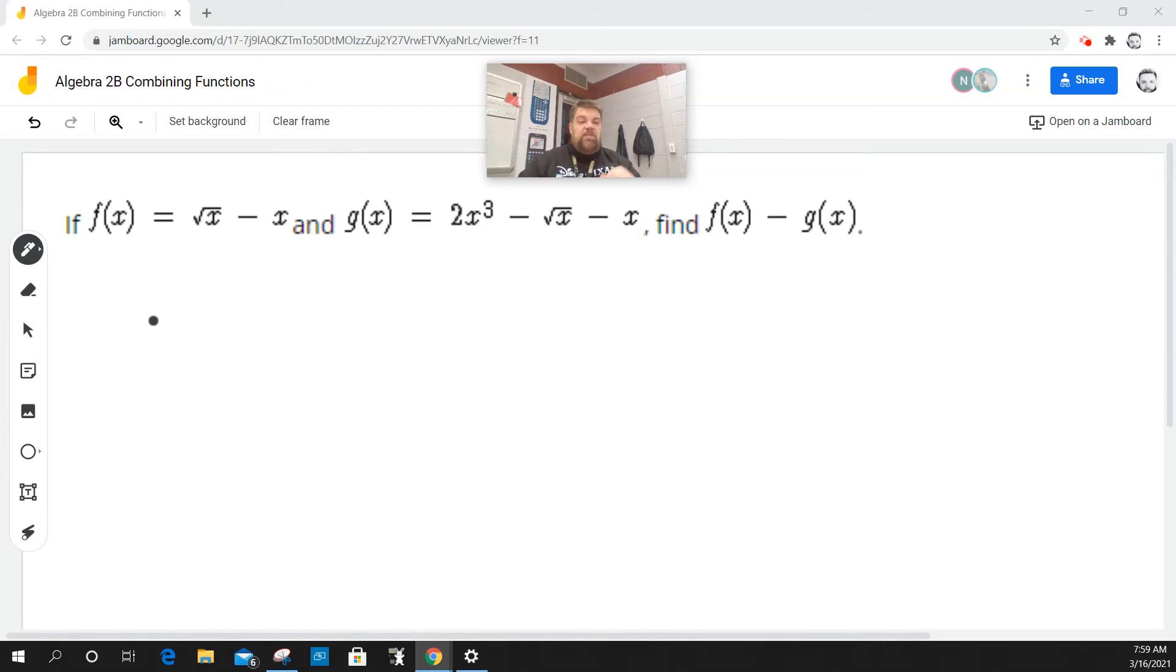Okay, now this one says if f(x) is equal to the square root of x minus x and g(x) is equal to 2 times x cubed minus the square root of x minus x, find f minus g of x.